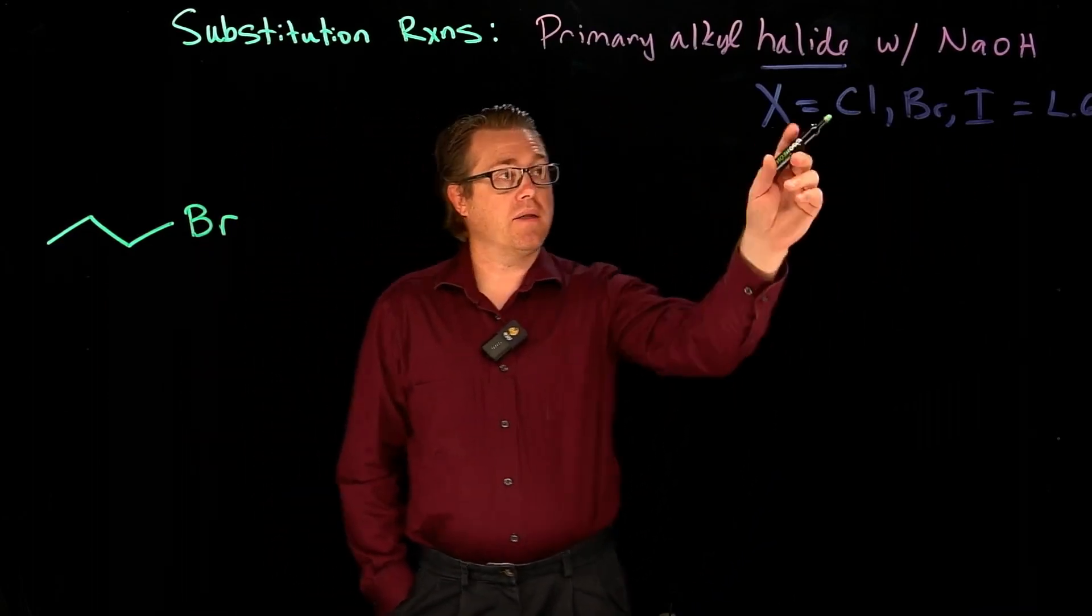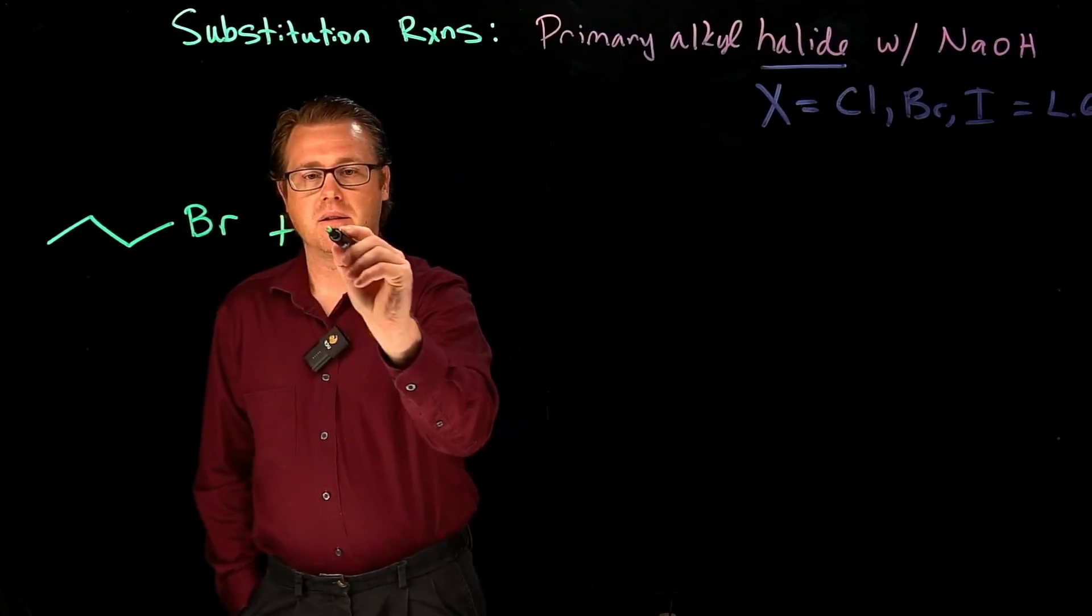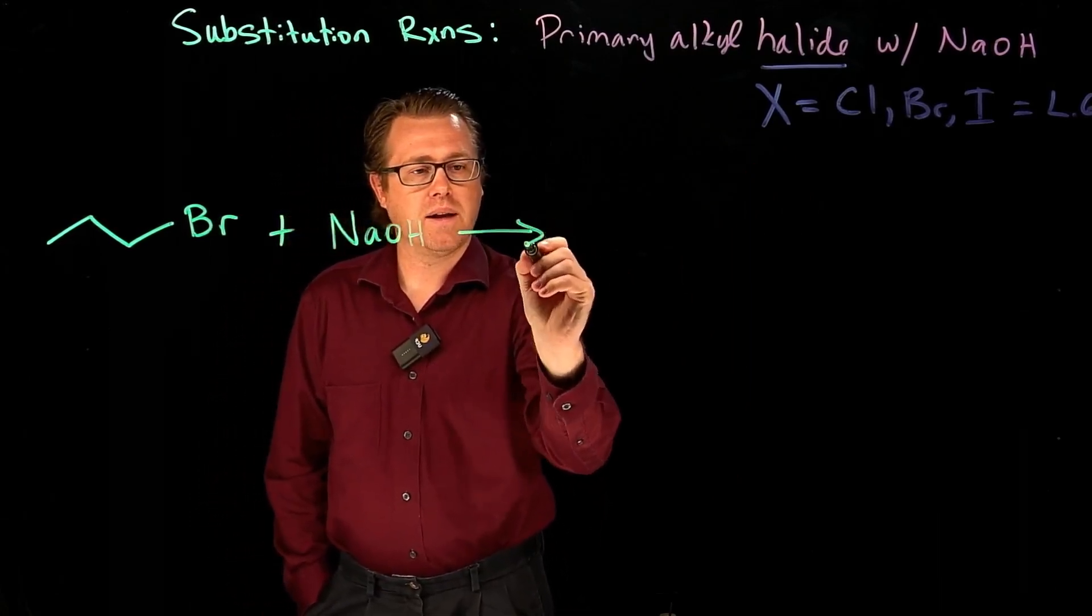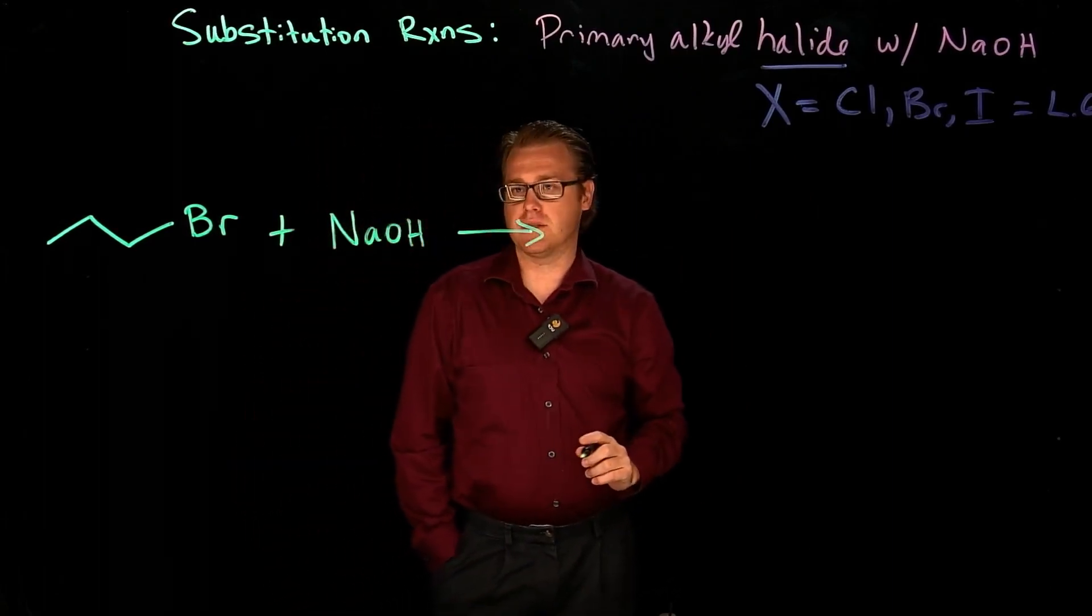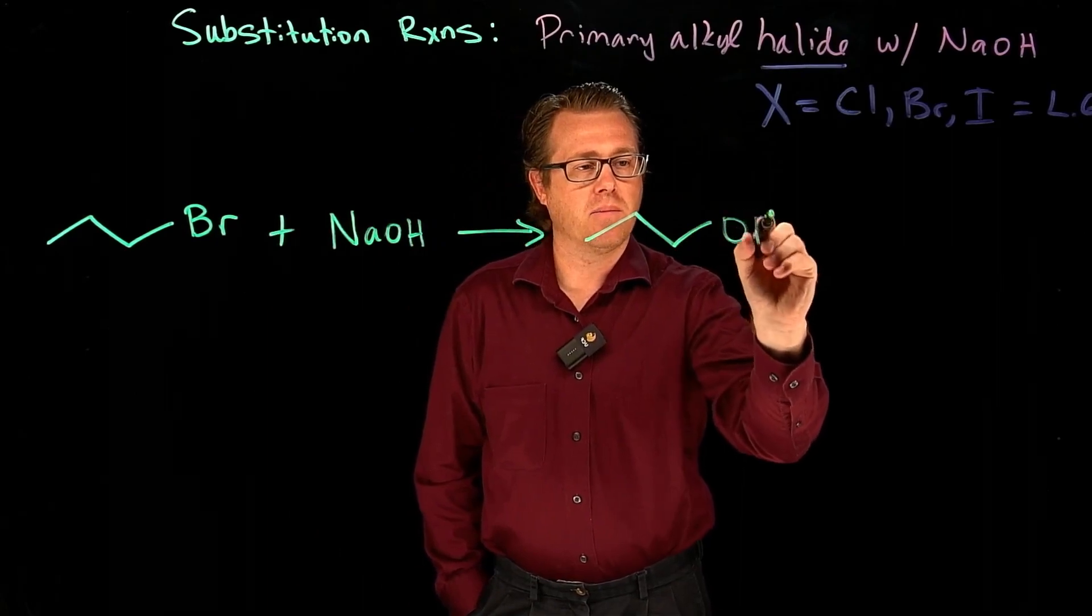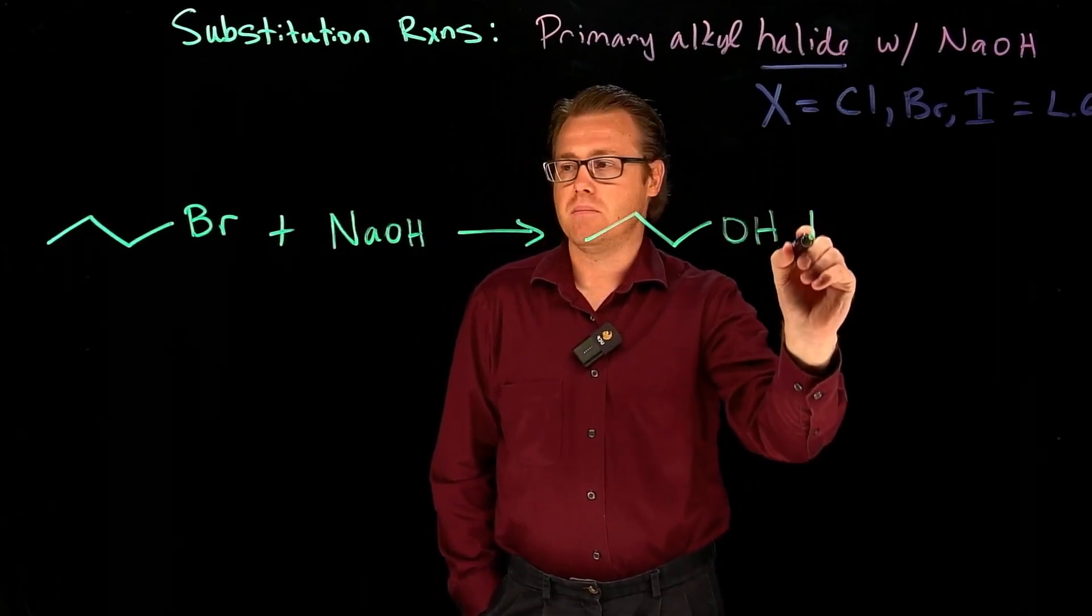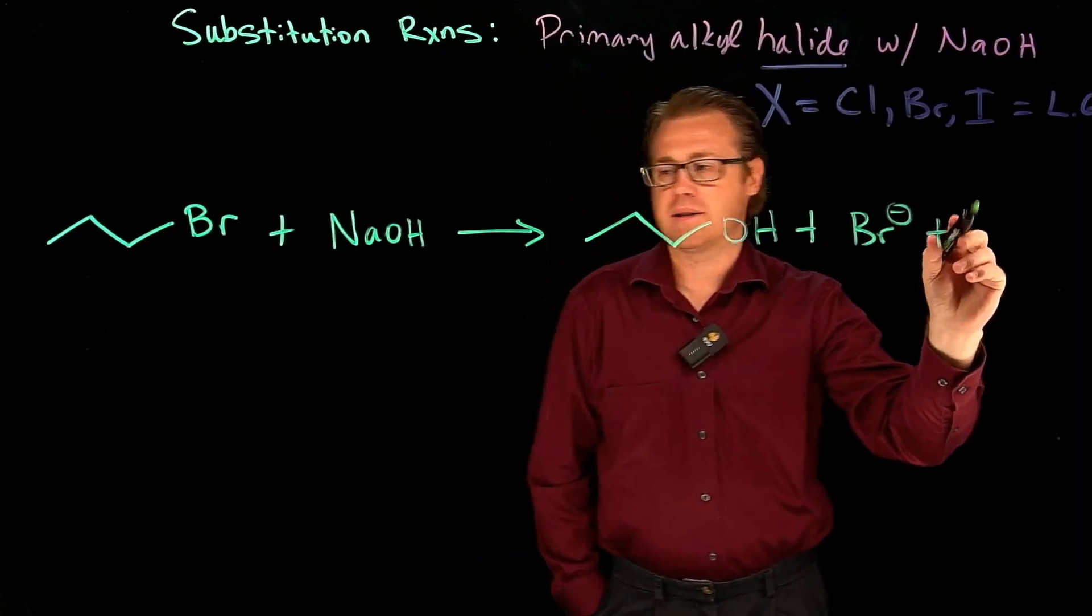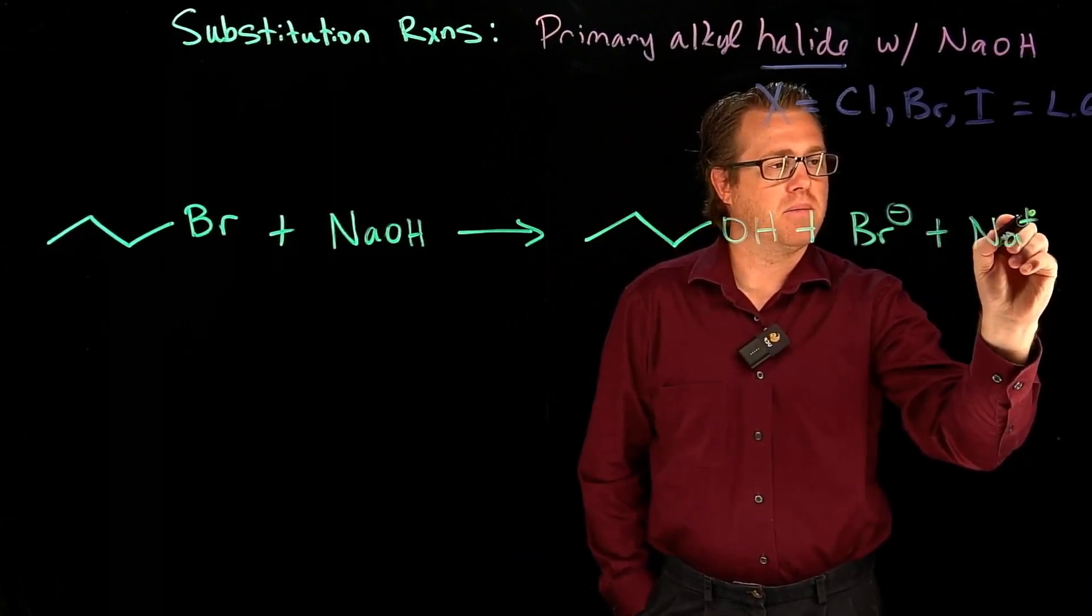And it says, with sodium hydroxide. And what is that going to give us? The answer is it's going to form an alcohol. And there's bromide going to be floating around, plus our sodium cation.